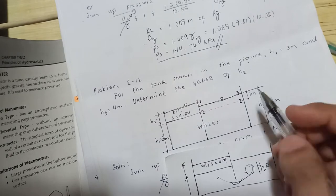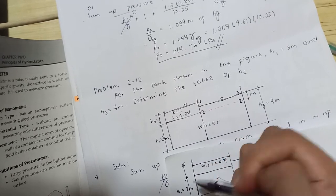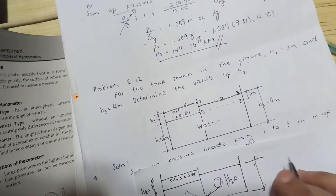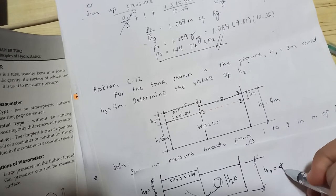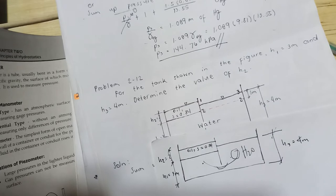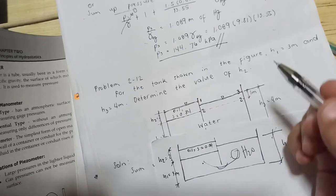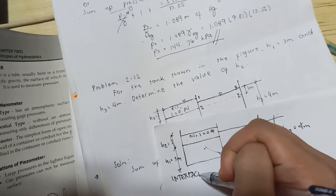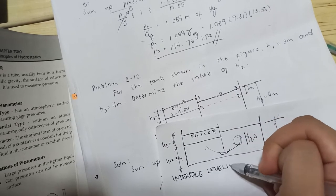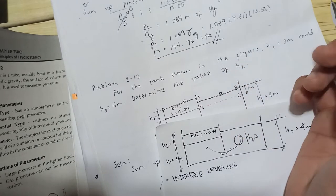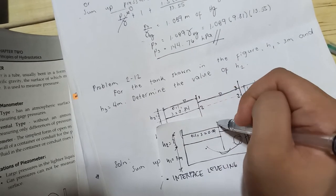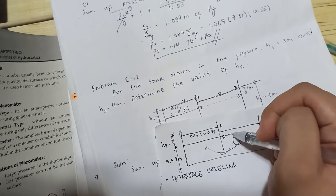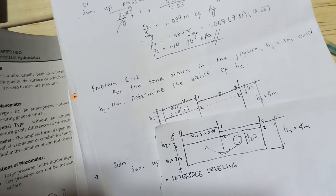Setting up the illustration with h1 equal to 3 meters, h2 unknown, and h3. Assigning interface levels: point 1 at the top open surface, point 2 at the oil-water interface, and point 3 at the bottom.